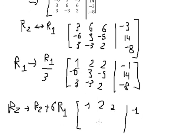So we will have zero. Six times two is twelve; twelve plus three is fifteen. Twelve with negative five gives seven. Negative six with fourteen gives eight.